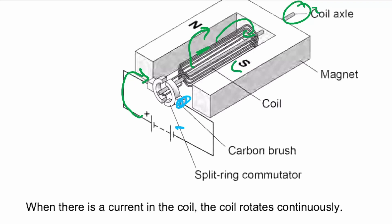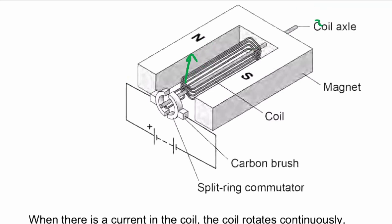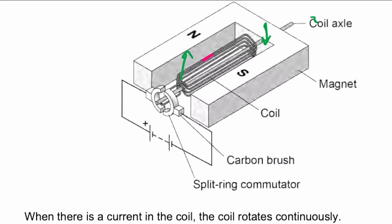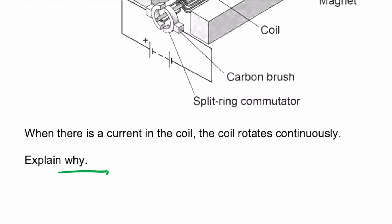By swapping connections every half revolution, the commutator reverses the current direction in the coil. This means the force on each side of the coil always remains in the same direction — one side always upward, the other always downward — regardless of the coil's position. That gives continuous rotation in the same direction. Hopefully you found that useful and good luck with your exams.